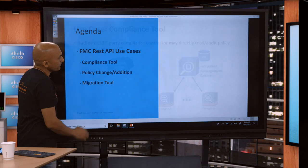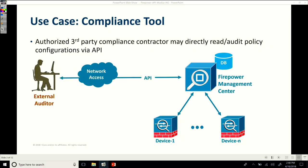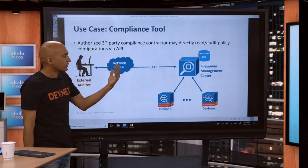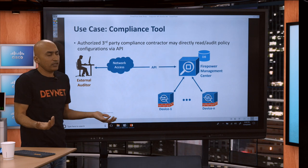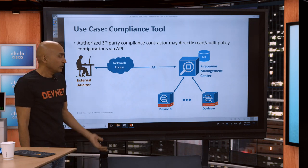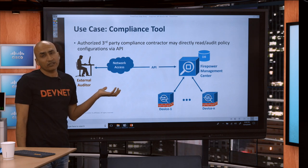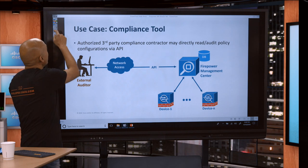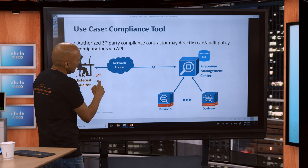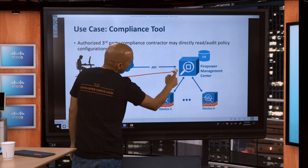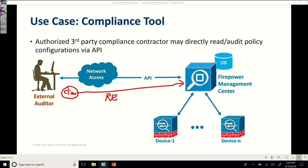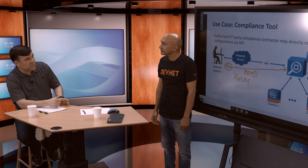Moving forward, the first one we want to tackle is the compliance tool. This is where you can either provide network access to a third-party vendor — an external auditor who does the audit for you — or you can write a tool that creates output in whatever format this auditor wants to consume. A simple use case: you write a tool, your REST client goes to FMC, and it reads all the rules — because all you do is read the configuration. Can I limit what they can do with the REST API so they can't go change my policy?